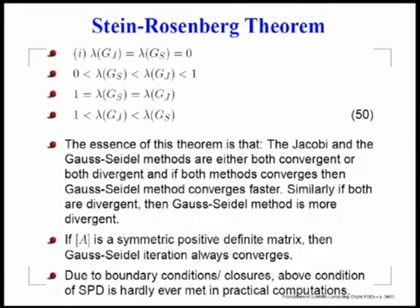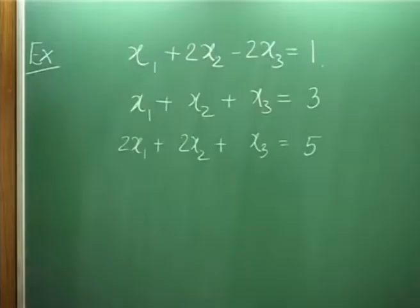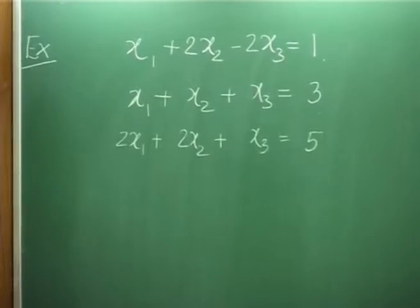When both methods converge, Gauss-Seidel performs better, confirming that using more current information improves convergence — provided the A matrix satisfies all three required properties. The case of neutral convergence means the error simply does not decrease, which is often seen in practice where after a few iterations nothing changes. Both methods can also diverge, with Gauss-Seidel diverging faster. We now consider a simple model problem — small enough to invert directly — but we examine it via Jacobi and Gauss-Seidel iteration.